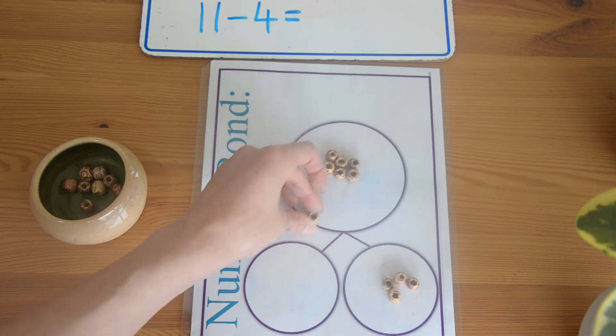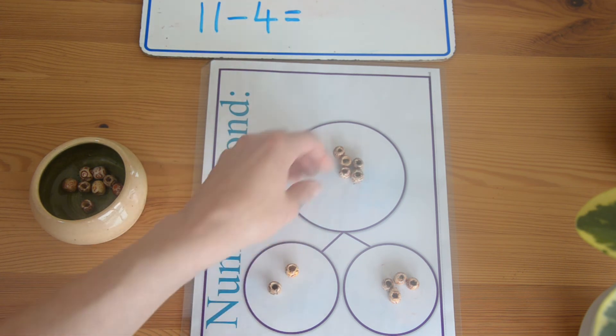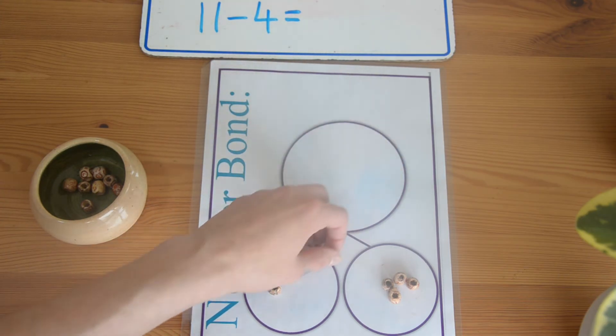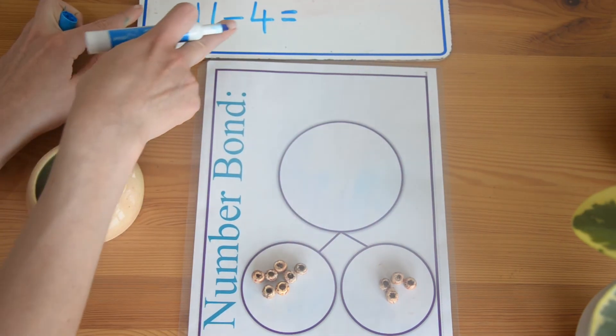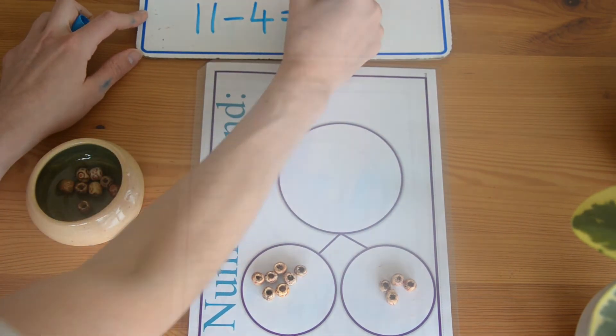1, 2, 3, 4, 5, 6, 7. Eleven take away four equals seven. Nine take away one.